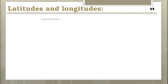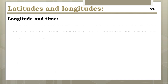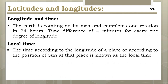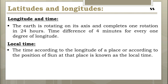Now let's learn about longitude and time. There is a definite relationship between longitude and time. The Earth rotates on its axis and completes one rotation in 24 hours, meaning 360 degrees of longitude are covered in 24 hours. This gives rise to a time difference of four minutes for every one degree of longitude.